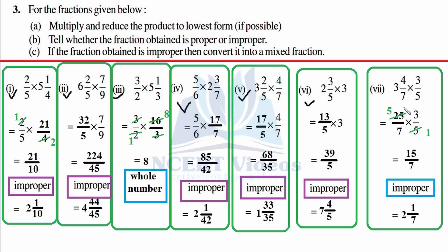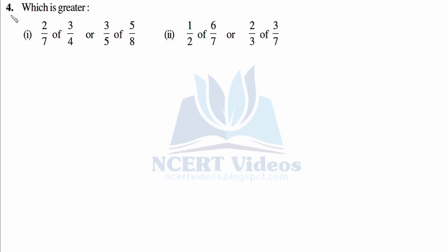Times 3 over 5: 1 times 5 is 5, 5 into 25 — cancellation gives 15 over 7. It is improper, so converting gives 2 and 1 over 7. That was question number 3. Question 4: Which is greater? We have to compare and find which fraction is greater. 'Of' means multiplication.